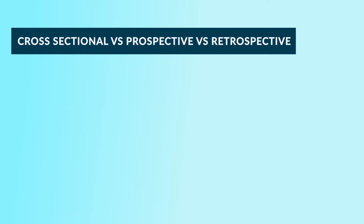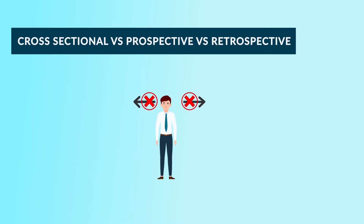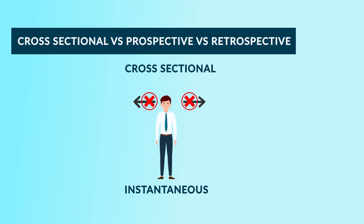Another important terminology is cross-sectional, prospective, and retrospective, which is based on the direction of the study. For example, if I take a group of diabetic patients and assess the proportion of them having depression using a HAMD scale — not following them forward or backward in time, but at an instantaneous point in time — this is called a cross-sectional study.